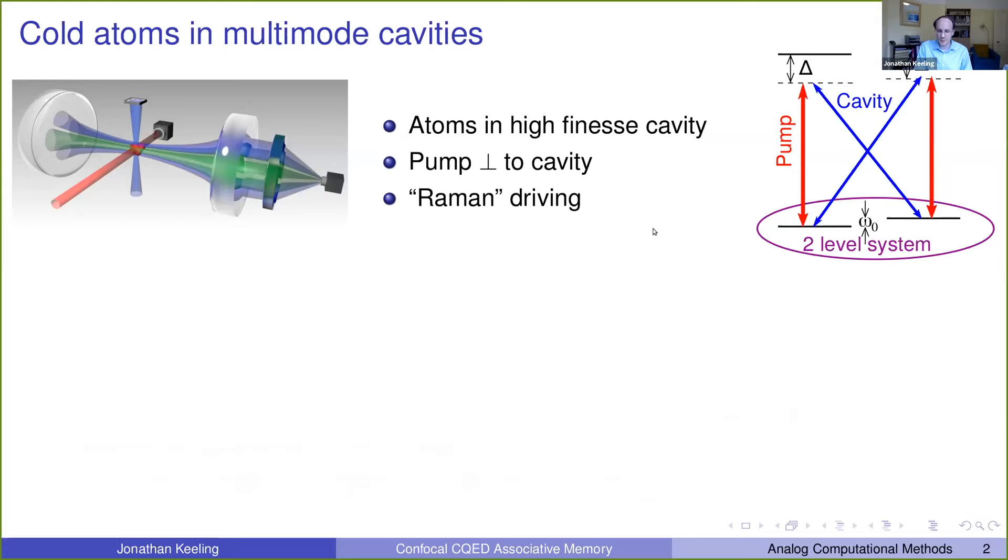What we are particularly interested in is the multimode version of this. This has three parts. It has the energy of the photon modes, which depends on the detuning between the pump and the cavity. It has a coupling between the photons and the two-level systems, so these effective spins. And in this multimode setup, that depends on a mode function chi mu evaluated at the position of those spins. And then there's the energy splitting between these spins. And just to remind you continually, this is an open dissipative system.